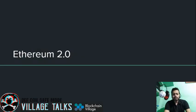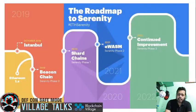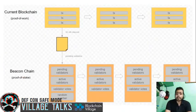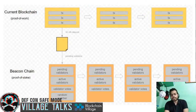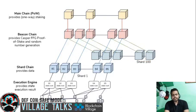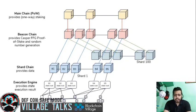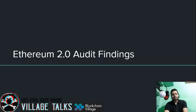Looking at the Ethereum 2.0 architecture: there is a roadmap to Serenity showing proof-of-work and proof-of-stake together. In more detail, there is a main chain based on proof-of-work, a beacon chain based on the Casper FFG proof-of-stake protocol, and random number generation. The beacon chain is cross-linked with shard chains, and underneath there is an execution engine.